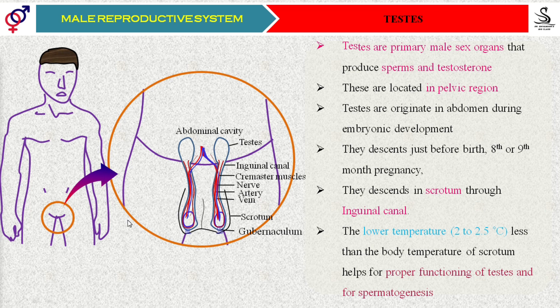There is also one more type of muscle present inside the scrotum. Here you can observe the presence of one more muscle — they are called dartos muscles. Now let us understand what is the role of the cremaster muscles and the dartos muscles.